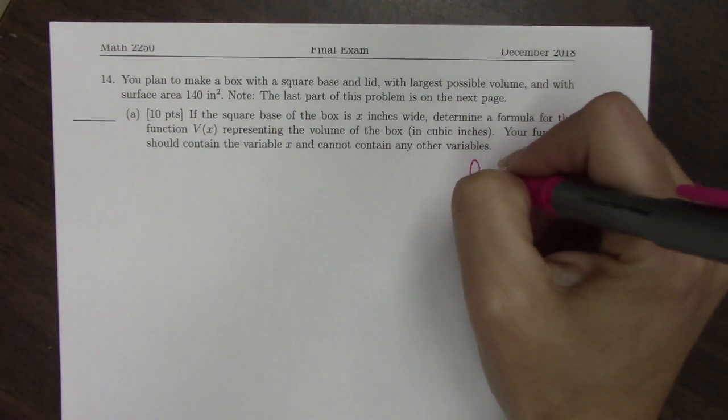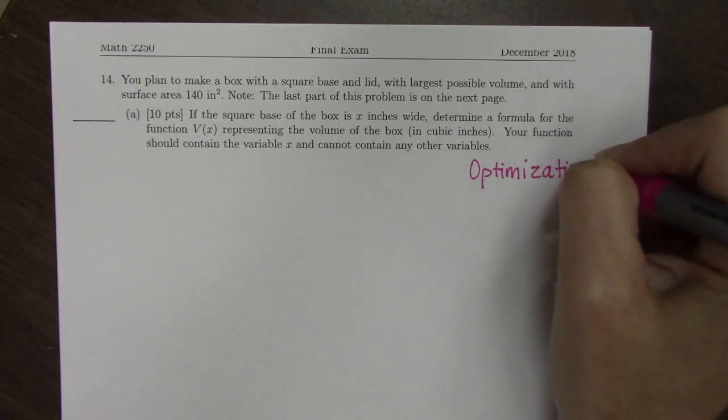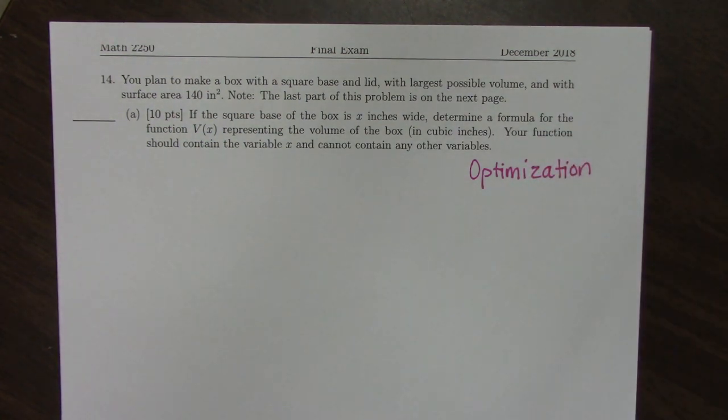Number 14 is an optimization problem. It says you plan to make a box with a square base and lid with the largest possible volume with a surface area of 140 inches squared. Notice the last part of this problem is on the next page. If the square base of the box is x inches wide, determine a formula for V(x) for the volume of the box in cubic inches. Your function should contain the variable x and may not contain any other variables.